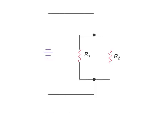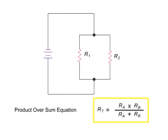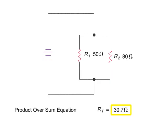Calculating the total resistance of resistors in a parallel circuit requires the use of the product over sum equation. In this parallel circuit, if R1 is 50 and R2 is 80, then the combined or equivalent resistance of the two resistors would be 50 times 80, or 4000 divided by 130, which is 30.7 ohms.